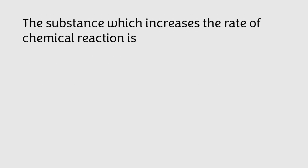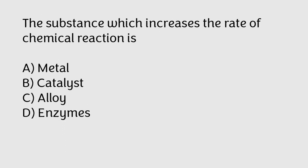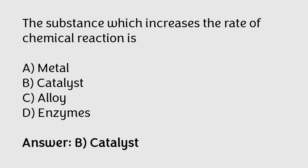The substance which increases the rate of a chemical reaction is: metal, catalyst, alloy, or enzymes? The correct answer is option B — the substance which increases the rate of a chemical reaction is a catalyst.